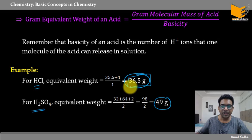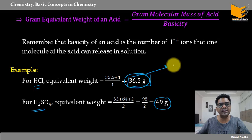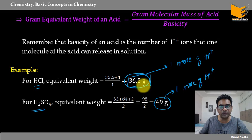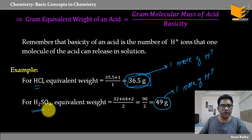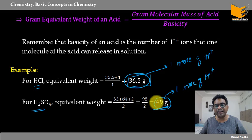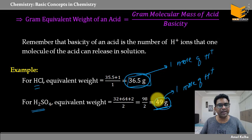Iska matlab: agar maa ne 36.5 gram HCl liya (1 mole), that gives 1 mole of H⁺. Aur agar 49 gram H₂SO₄ liya — har H₂SO₄ 2 H⁺ deta hai, toh 49 gram (½ mole) of H₂SO₄ is also going to give 1 mole of H⁺. Yeh dono ke equivalents same hain — kuyunki woh same moles of H⁺ de rahe hain. Hala ki dono ka mass alag hai.